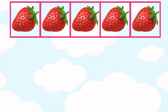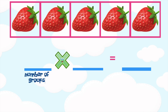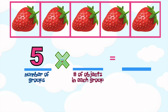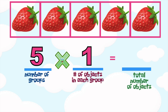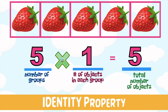Let's look at this next illustration. The first factor — the number of groups — is 5. The second factor — the number of objects in each group — is 1 strawberry. The total number of objects is 5. So 5 times 1 is equal to 5. This property of multiplication is what we call the identity property.